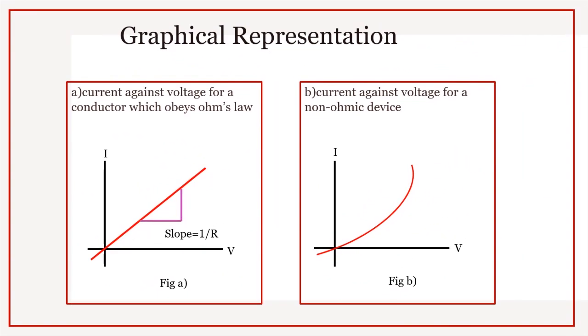If a graph is drawn between voltage and current, the slope of it will be the resistance offered by the resistor. Only the materials who obey Ohm's law will give a straight line graph.